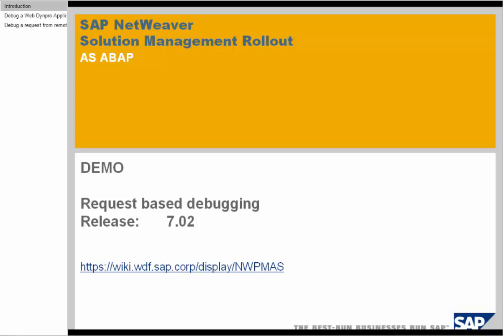In this demonstration we introduce request-based debugging, focusing on NetWeaver Release 7 Enhancement Package 2. With request-based debugging, you can debug all external HTTP or RFC requests of a particular end-user, independent of which user or application server currently executes the request. The execution of requests of other end-users will not be affected, which is essential for a productive system.